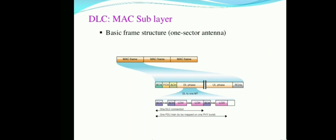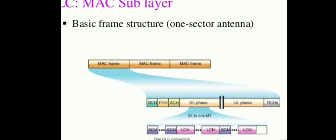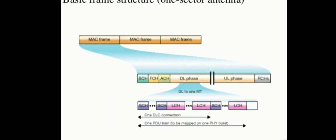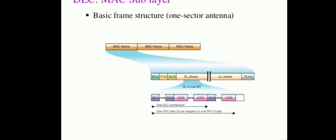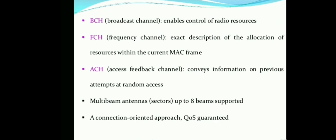The basic MAC frame structure includes a MAC frame divided into BCH, FCH, and ACH. BCH (Broadcast Channel) enables control of radio resources. FCH (Frequency Channel) extracts descriptions of resource allocation within the current MAC frame. ACH (Access Feedback Channel) conveys information on previous random access attempts. Multi-beam antennas support up to 8 beams.